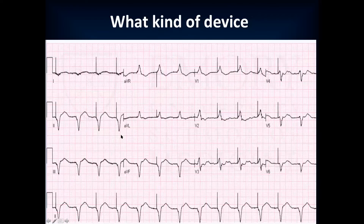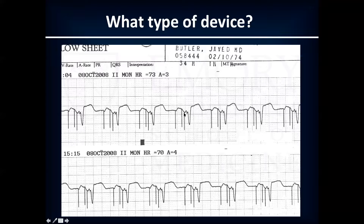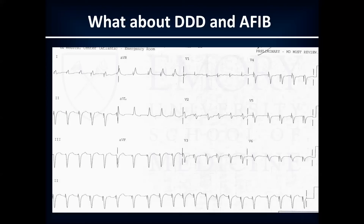What type of device is this? BiV. You have short AV intervals, and in BiV you're able to separate the LV and RV a little bit temporally — a BiV offset. This tells you three pacing spikes. You have an A causing P waves, and P waves causing the QRS. That's all I'm going to talk about as far as device identification.